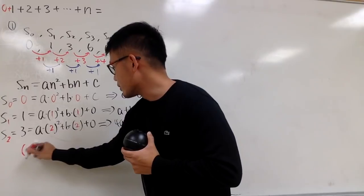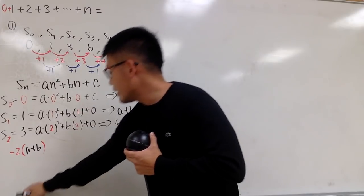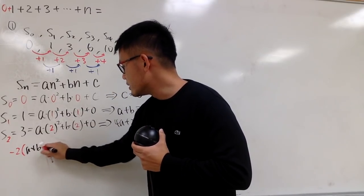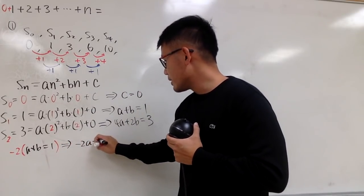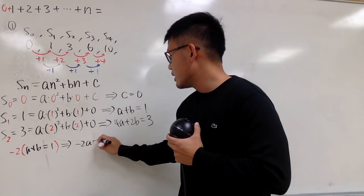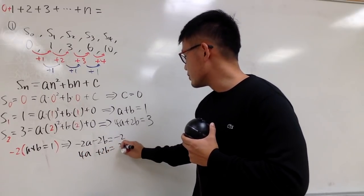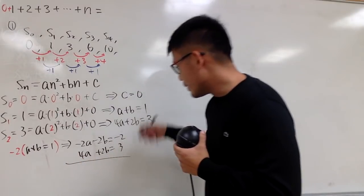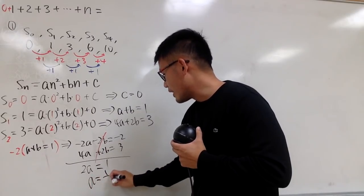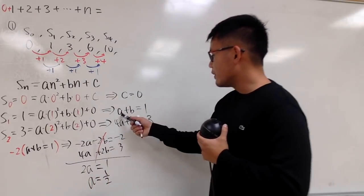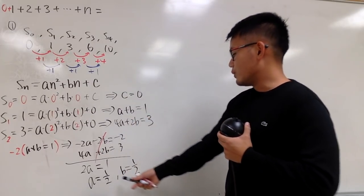Multiplying the first equation by negative 2 throughout: negative 2a minus 2b equals negative 2. Combined with 4a plus 2b equals 3, we cross out terms to get 2a equals 1, so a equals one half. If a is one half, then from a plus b equals 1, b must also be one half.